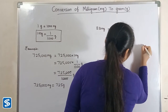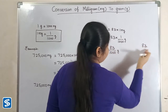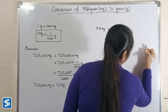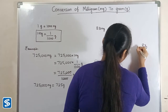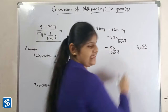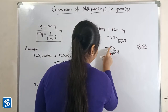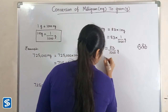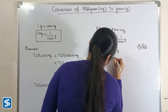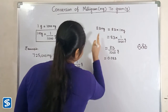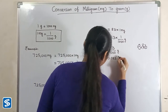83 multiplied by one will be 83, so 83 divided by 1,000 grams. The easy way to divide by 1,000 is to move the decimal point three places to the left: one, two, three. We have to fill zeros in the extra spaces. So 83 divided by 1,000 grams will be 0.083 grams. So 83 milligrams is equal to 0.083 grams.